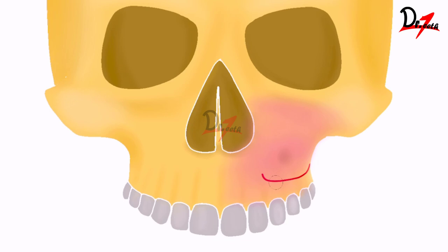After making the incision, we will elevate the muco-periosteal flap up to the infra-orbital ridge. Here we have the infra-orbital nerve, so make sure that you don't damage it. Now we have elevated our muco-periosteal flap to the infra-orbital ridge, taking care that the infra-orbital nerve is not injured.